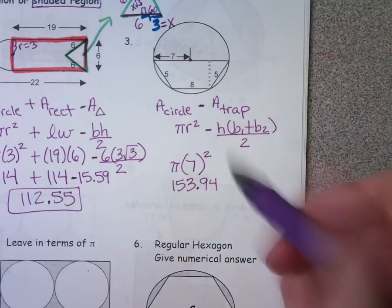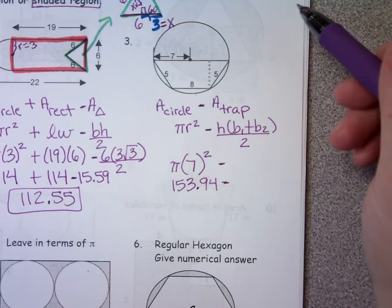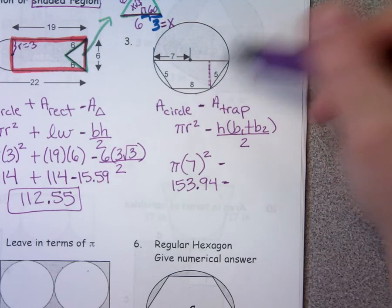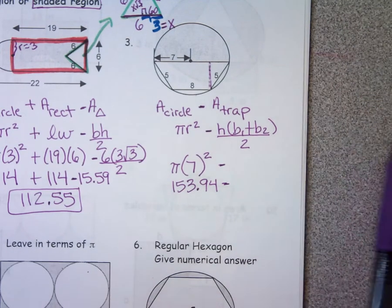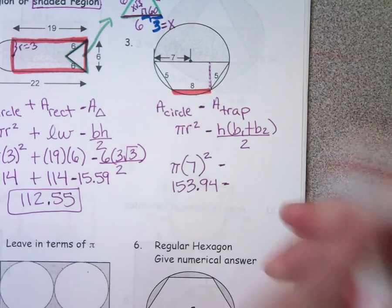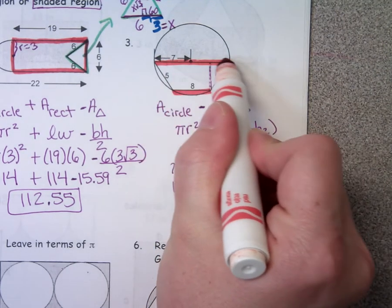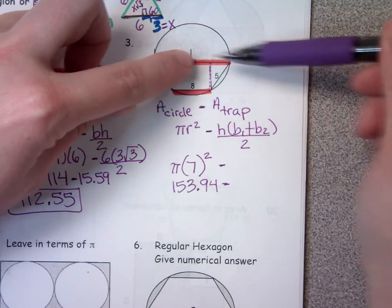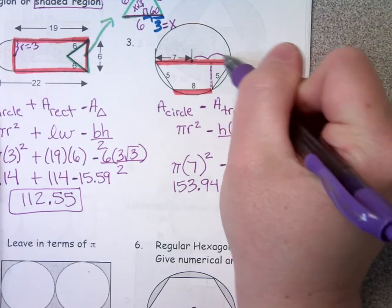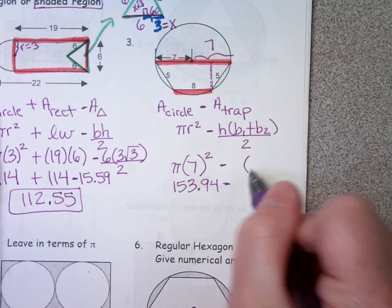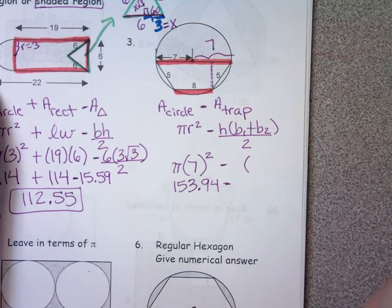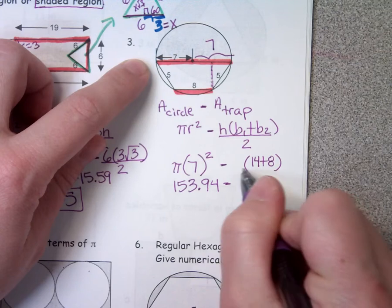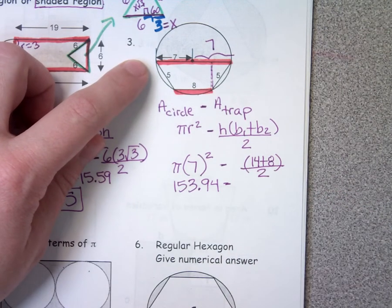Next I want to work on my trapezoid, and I'll be subtracting that. Looking at the trapezoid, I need to figure out the height — I don't see that right now. Let's talk about the bases: how long is this base? Eight. How long is that base? Fourteen. If seven is the distance from the center to the edge, then that must be seven also, so from here to here is seven. My bases are 14 plus eight.